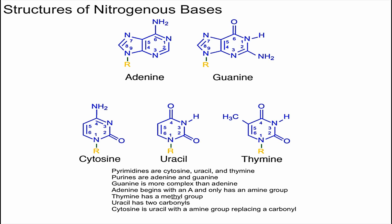For pyrimidine numbering, you start with one at this nitrogen and then go around counterclockwise. It's the same for all pyrimidines: nitrogen is one, carbon is two, nitrogen is three, carbon is four, carbon is five, and carbon is six. How I like to remember this is that the two nitrogens are at positions one and three, and then you either have a carbonyl or an amine at carbons two and four.